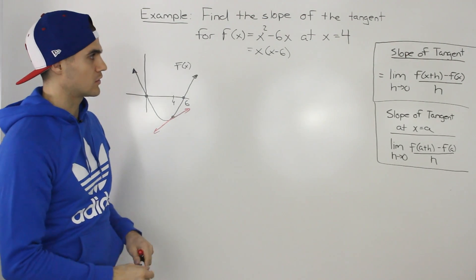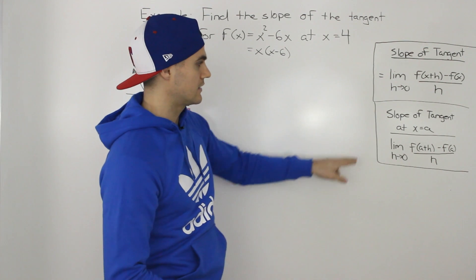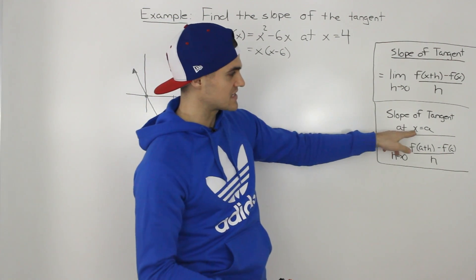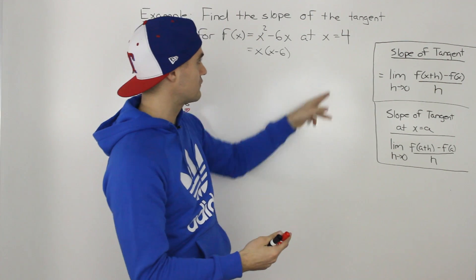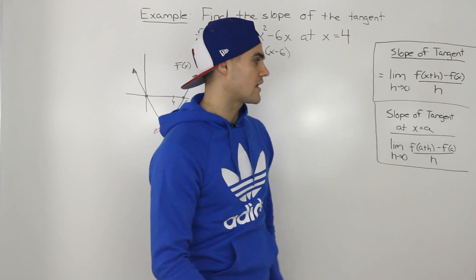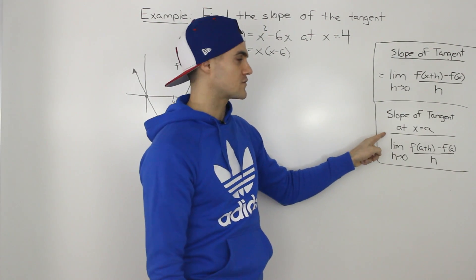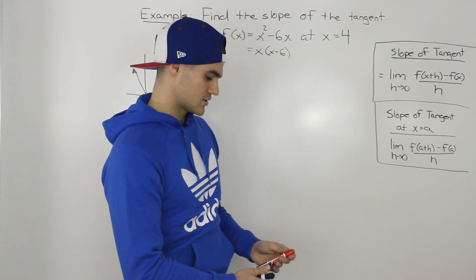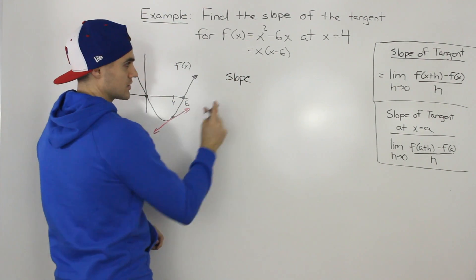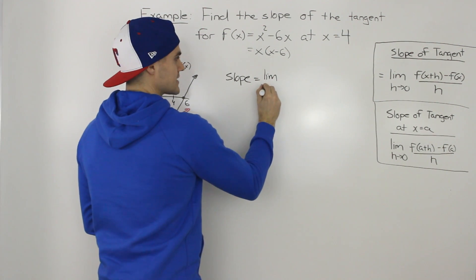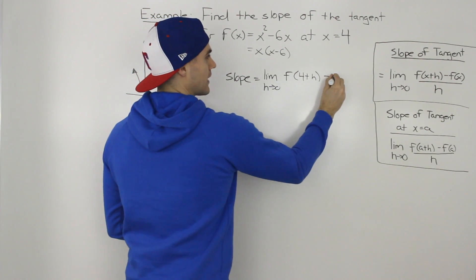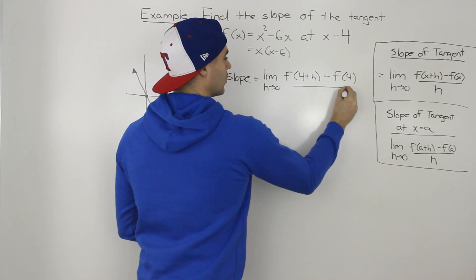To find the actual slope of that tangent we're going to use the formula. I also made an additional formula here: when finding the slope of the tangent at a specific x value — like x = a, where here a = 4 — it's the same formula but with a in place of x. Sometimes your textbook will show it in this format. So the slope of this tangent equals the limit as h goes to 0 of [f(4+h) - f(4)] / h.